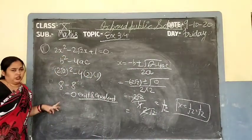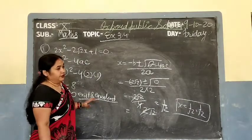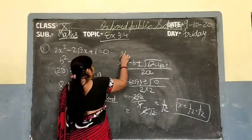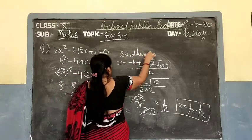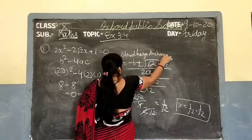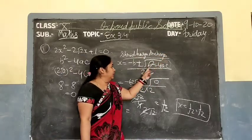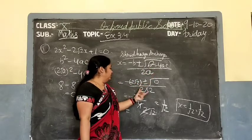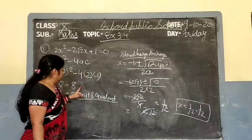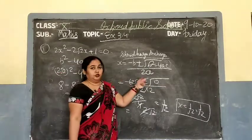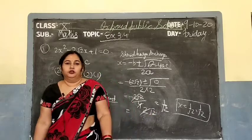Summary: First check existence using b square minus 4ac, greater than 0 means roots exist or not. Then apply the Sridharacharya formula: x equals minus b plus minus root of b square minus 4ac upon 2a. With b equal to 2 root 2 and discriminant equal to 0, after cutting terms, the answer is x equals 1 upon root 2 and 1 upon root 2 — equal roots.